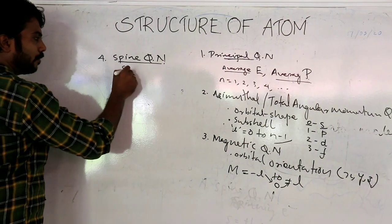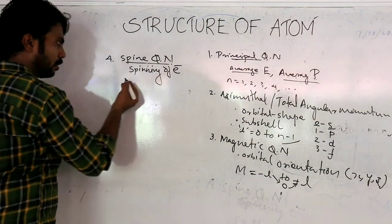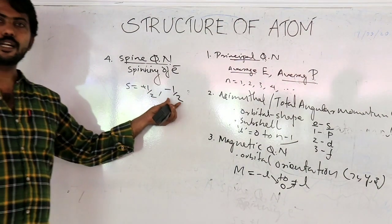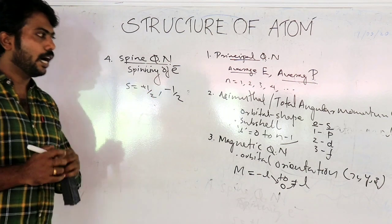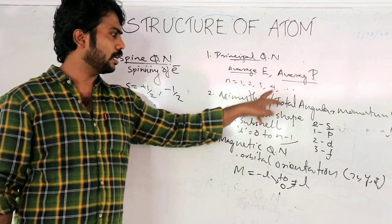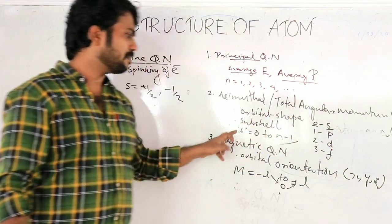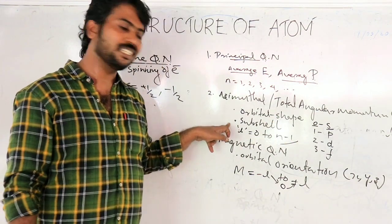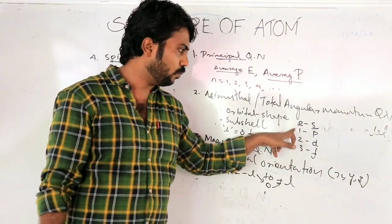The fourth quantum number relates to the spinning of the electron. This spin value is equal to plus or minus one half — clockwise or counterclockwise. So we have three numbers: Principal, Azimuthal, and Magnetic. The Principal quantum number gives average energy and average position, with values 1, 2, 3, 4, etc.